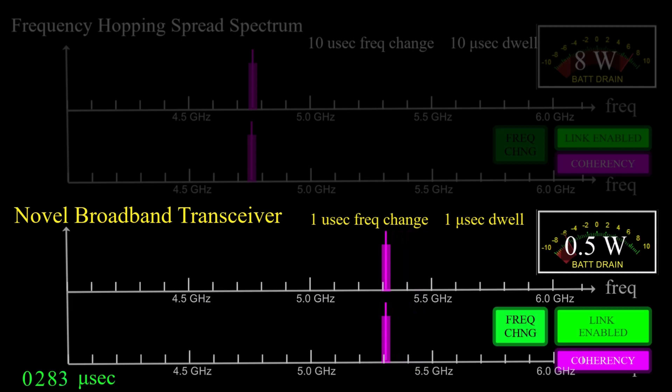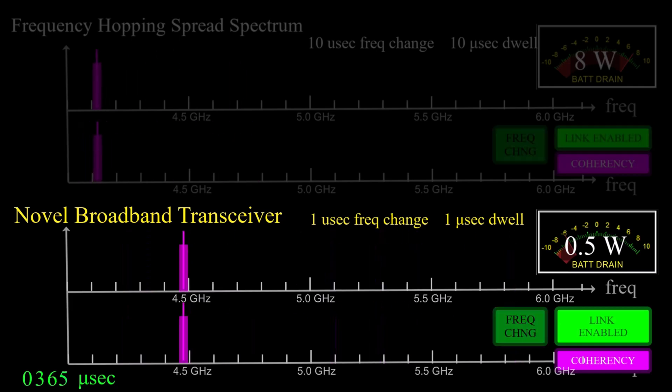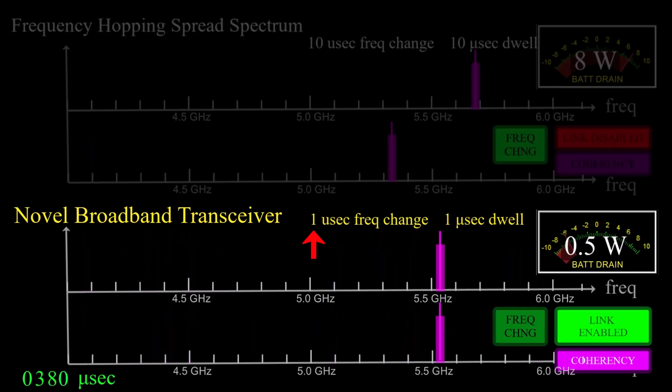The bottom half of the display shows the novel broadband transceiver. The transmitter and receiver remain coherent at all times, so the link is continuously open even during frequency transitions. The frequency transition time is 1 microsecond over 1 gigahertz, and the dwell time is also 1 microsecond.